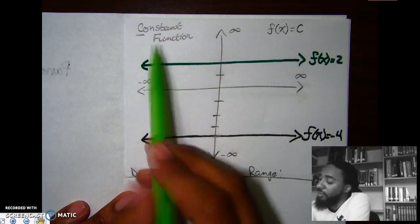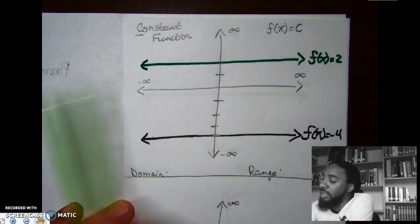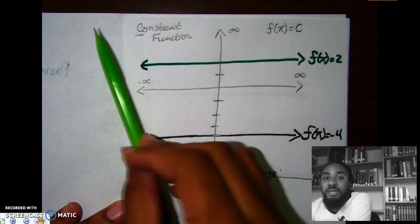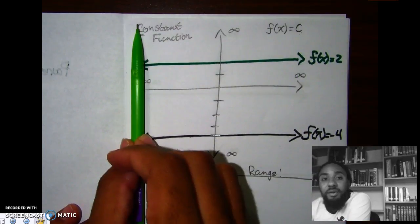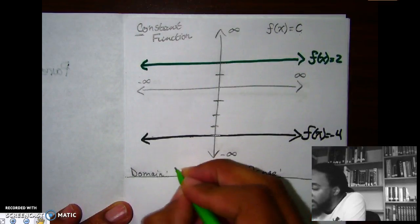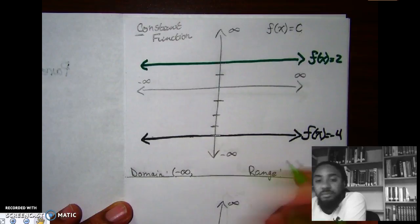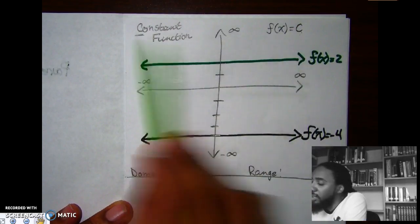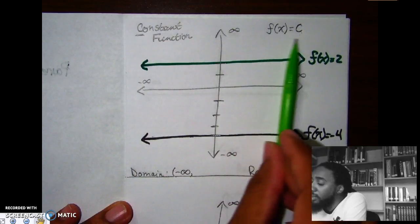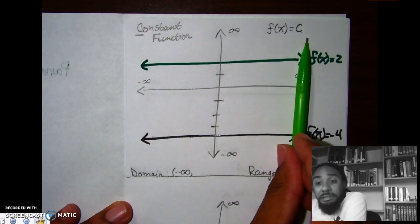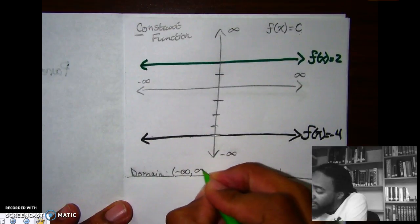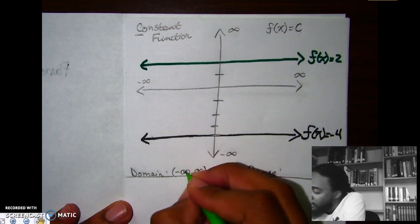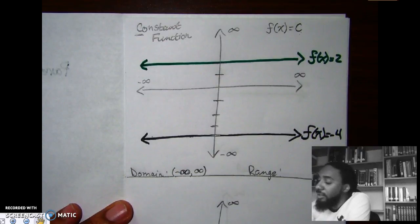Now for domain and range, we're only working with the green graph. For domain, we go from left to right. The arrow on the left side means negative infinity, and the arrow on the right side means positive infinity. Infinity always gets parentheses in interval notation. So the domain is negative infinity to positive infinity.